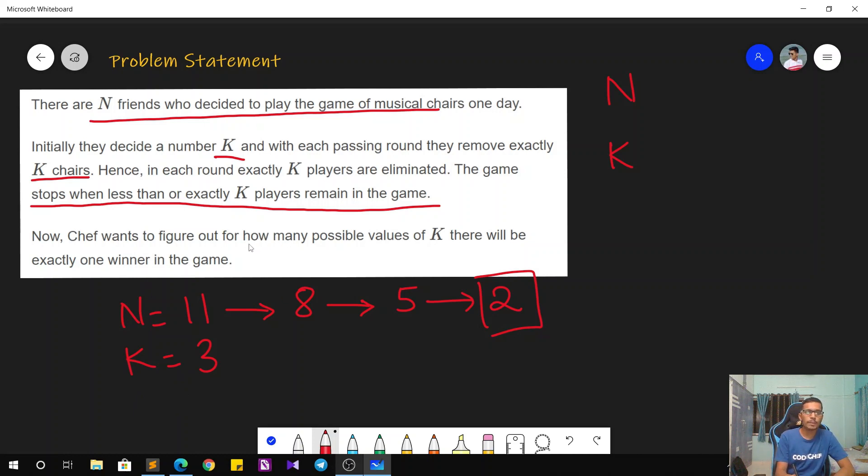Now Chef wants to figure out how many possible values of K exist such that there will be exactly one winner in the game. So basically, if there is only one chair remaining at the end after some number of rounds, then that player is the winner of the game. So the question is: how many possible values of K exist such that we have only one chair remaining at the end of all rounds?